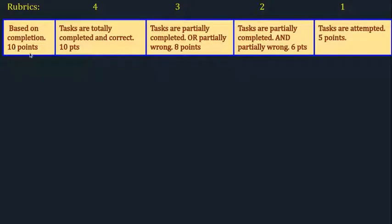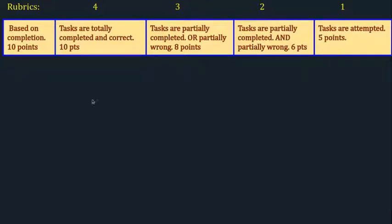Rubrics. Based on completion, 10 points. Tasks are totally completed and correct — you get 10 points. Tasks are partially completed or partially wrong — 8 points. Tasks are partially completed and partially wrong — 6 points. And tasks are attempted — 5 points.